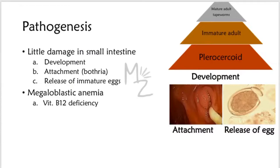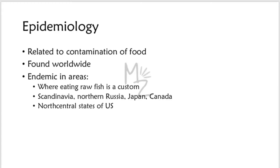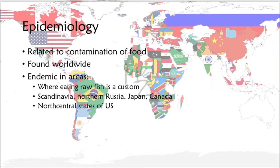Epidemiology: the epidemiology of Diphyllobothrium latum infection is related to ingestion of raw or inadequately cooked fish and to contamination of freshwater with human feces. The disease is found worldwide but is endemic in areas where eating raw fish is a custom, such as Scandinavia, northern Russia, Japan, Canada, and certain north-central states of the United States.